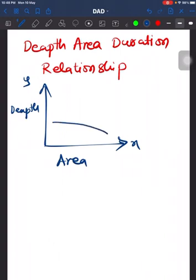We have curves for different durations. This curve is for one hour, this curve is for six hours, and this curve is for 18 hours.